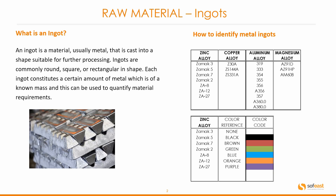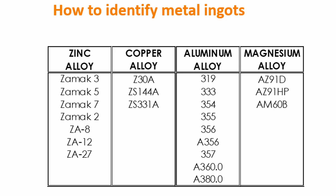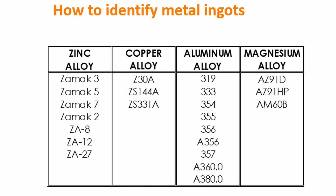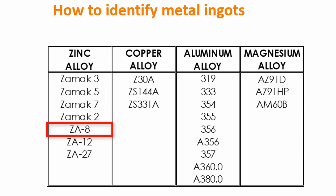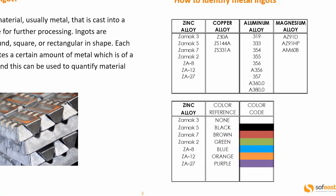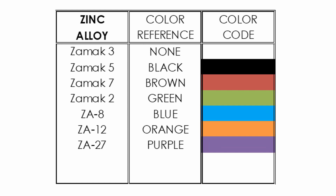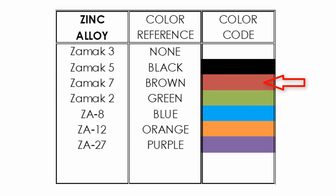Let's have a look at how to identify metal ingots. We have some common materials in this table: zinc alloy, copper alloy, aluminium alloy, and magnesium alloy. Some of these are trademark names and others are common grade numbers. For example, zinc alloys include Zamak 3, 5, 7, and 2, as well as ZA 8, 12, and 27. In the table at the bottom, there is a color code reference — Zamak 3 has no color coding whereas Zamak 7 has a brown color coding, making it easy to identify different zinc alloy ingots.